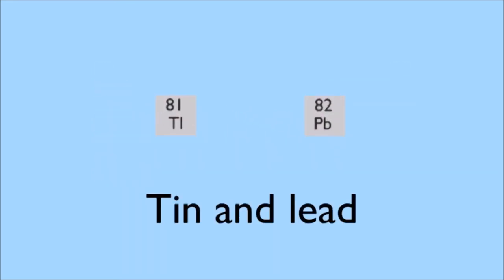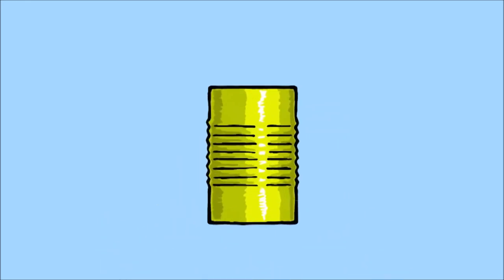Molten tin, in fact, is sprayed onto iron cans to stop them reacting with any water contained in whatever is inside the can.